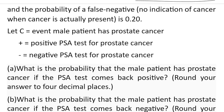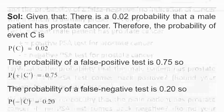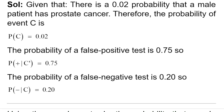There are some events predefined in the problem. Event C represents that the patient has prostate cancer. Event plus (+) represents that the PSA test gives a positive result. Event minus (−) represents that the PSA test gives a negative result. Let us start our solution.